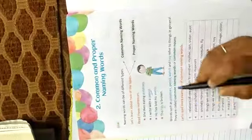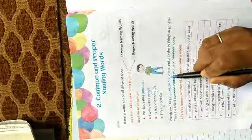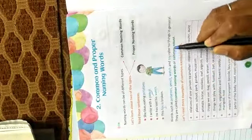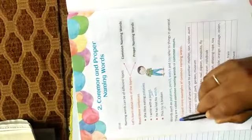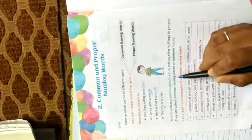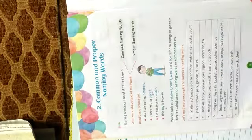So my dear students, potatoes, pencil, watch and toy refer to things in general. They are called common naming words or common nouns.